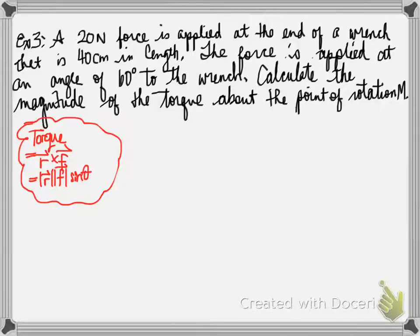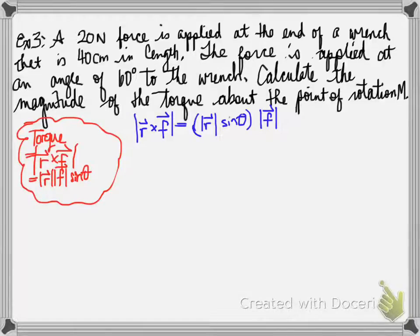Again, we're finding the magnitude. So the magnitude of R cross F is equal to the magnitude of R times the magnitude of F, sine theta. What we're doing here is when you look at all the values, you plug it in,